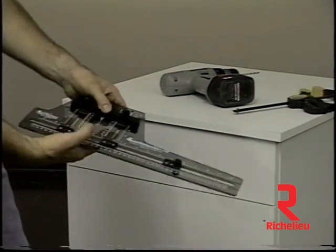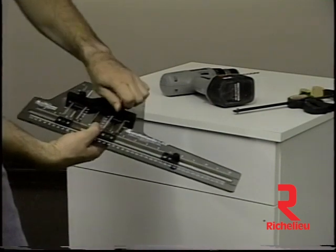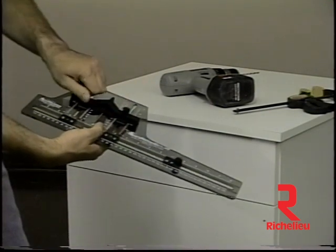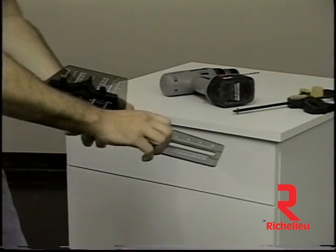For drilling of drawer fronts, the fence is set to the center dimension of the drawer front height. A slide stop is positioned to the center dimension of the drawer width.